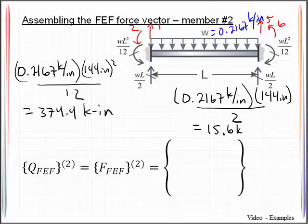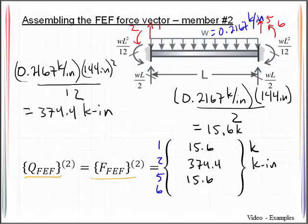So we can generate the fixed end force vector for member 2. Remembering that the degrees of freedom are 1, 2, 5, and 6. And I then just need to put those known quantities in their appropriate place. So go to 374.4 kips. So that's what I have coming from member 2.